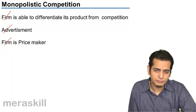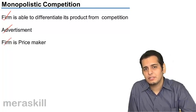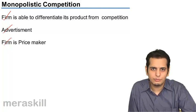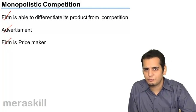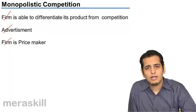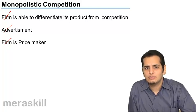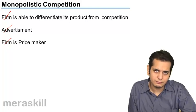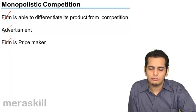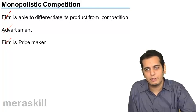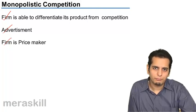Finally, the firm is a price maker. In perfect competition, the firm is a price taker since there are many buyers and sellers and homogeneous products. But what changes here is that since the products are not homogeneous and each firm has different products, it can charge the price it wants — so the firm becomes the price maker and not the price taker, as is the case in perfect competition.